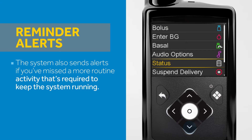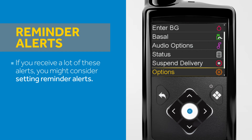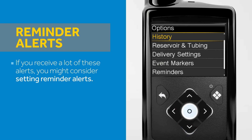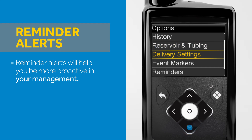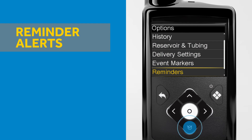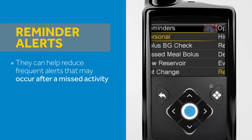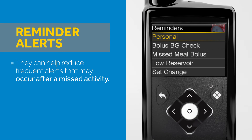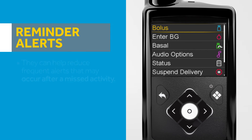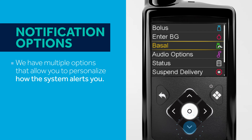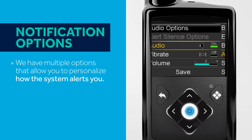The system also sends alerts if you've missed a more routine activity that's required to keep the system running, such as providing a calibration. If you receive a lot of these alerts, you might consider setting reminder alerts. Reminder alerts will help you be more proactive in your management and can help reduce frequent alerts that may occur after a missed activity.